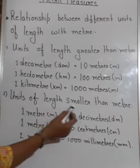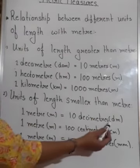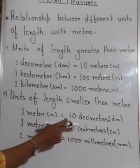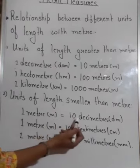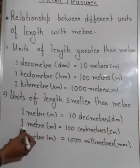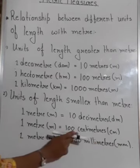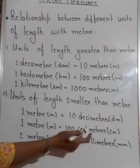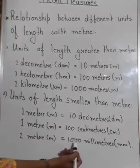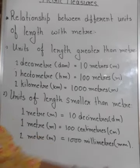Now we have units of length smaller than meter. 1 meter equals 10 decimeters. 1 meter equals 100 centimeters — centimeter in short is written as 'cm'. 1 meter equals 1000 millimeters — millimeter in short form is written as 'mm'.